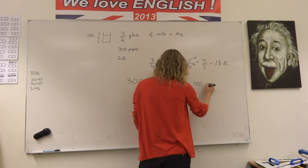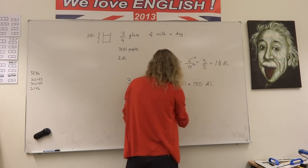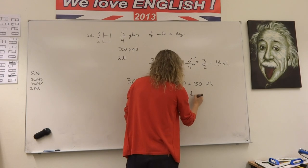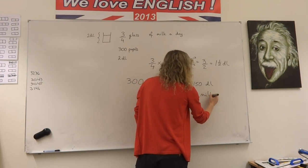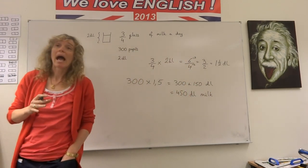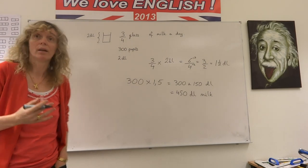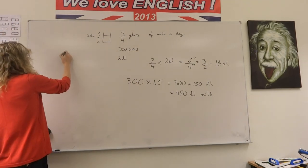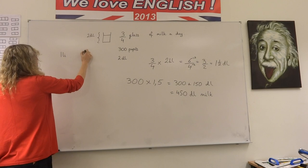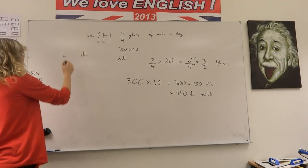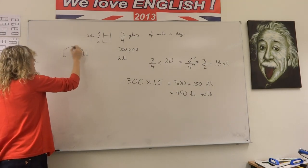So that would give us 450 deciliters of milk. But the question asked us how many liters of milk are they drinking, so then we have to think volume conversions. How many deciliters are there in one liter?